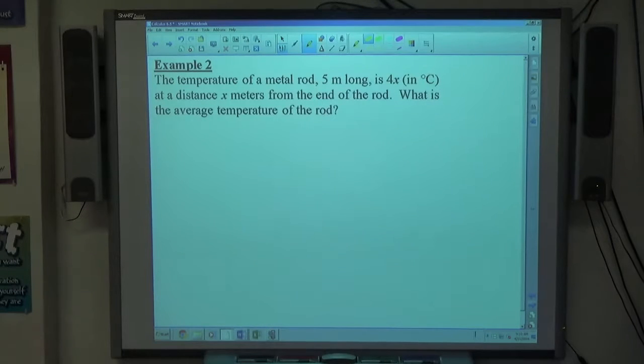Example 2, the temperature for a metal rod 5 meters long is 4x in degrees Celsius at a distance x meters from the end of the rod. What is the average temperature for the rod?